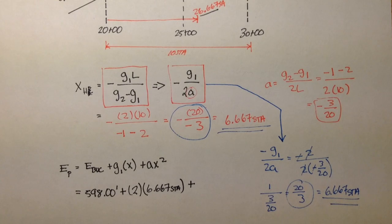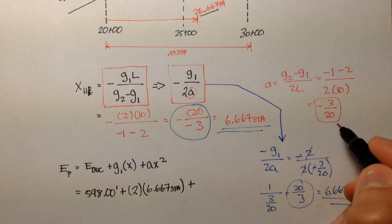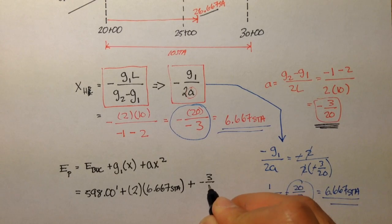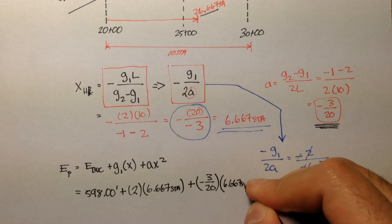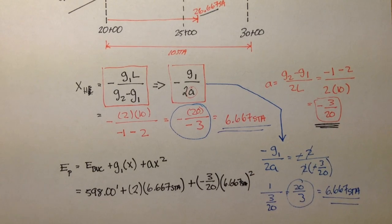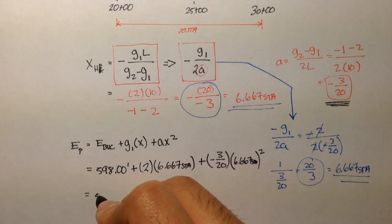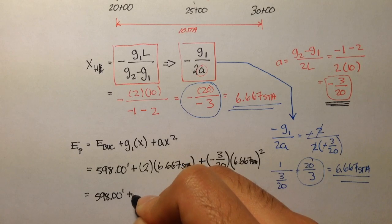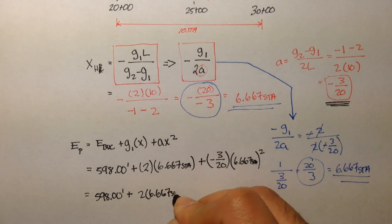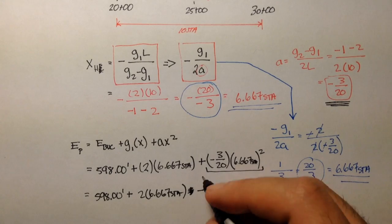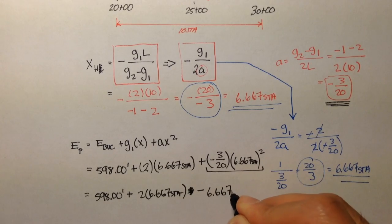Plus our A term. Our A term we figured out up here, that's A, is negative 3 over 20 times x squared, 6.667 stations squared. So if we simply solve this out, this is going to be 598 plus 2 times 6.667 stations minus 6.667. And if we solve this out, we'll get 604.67.